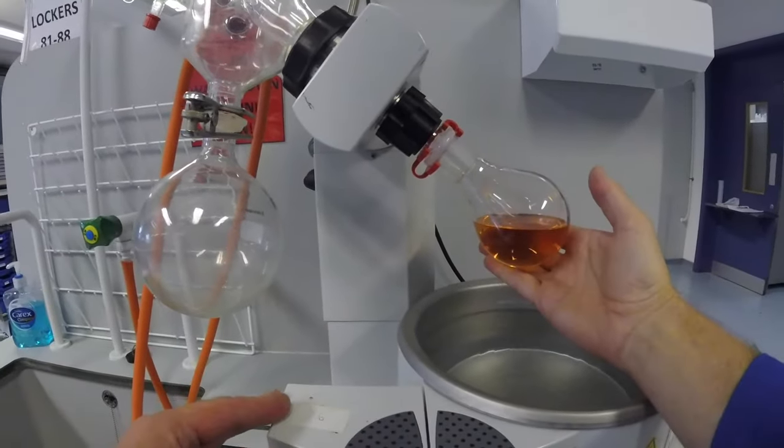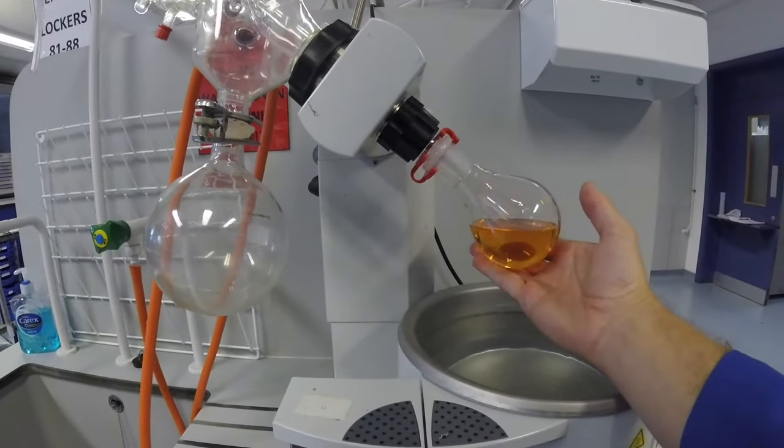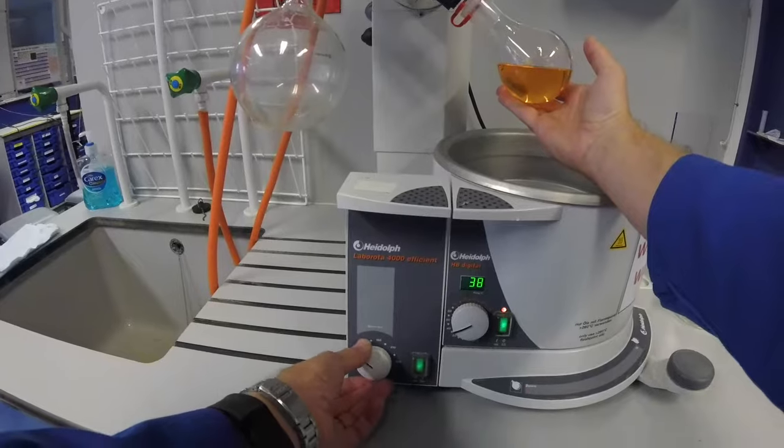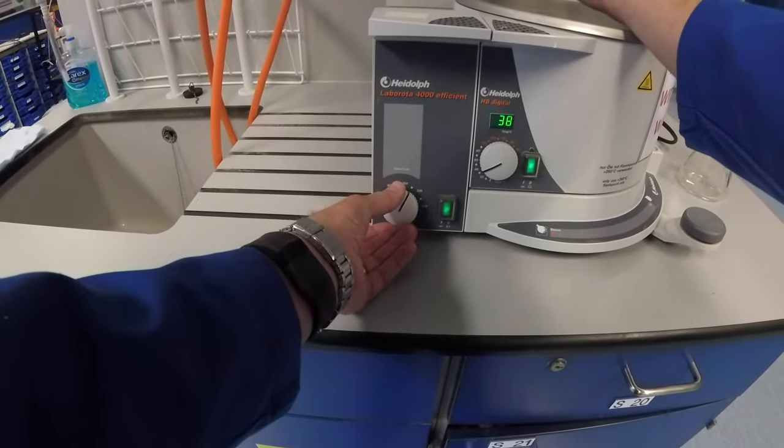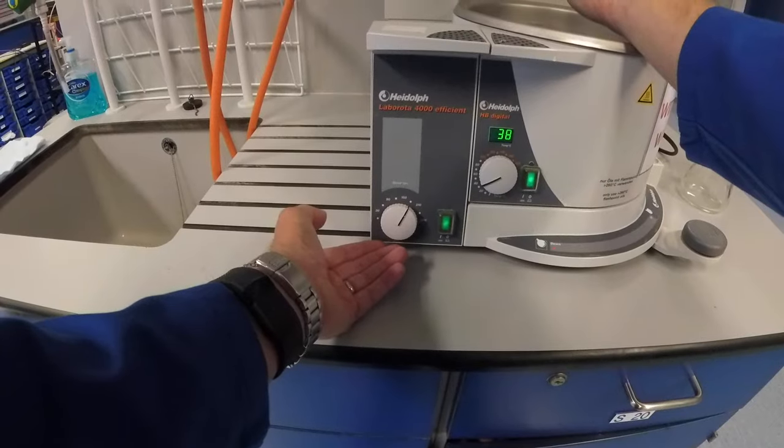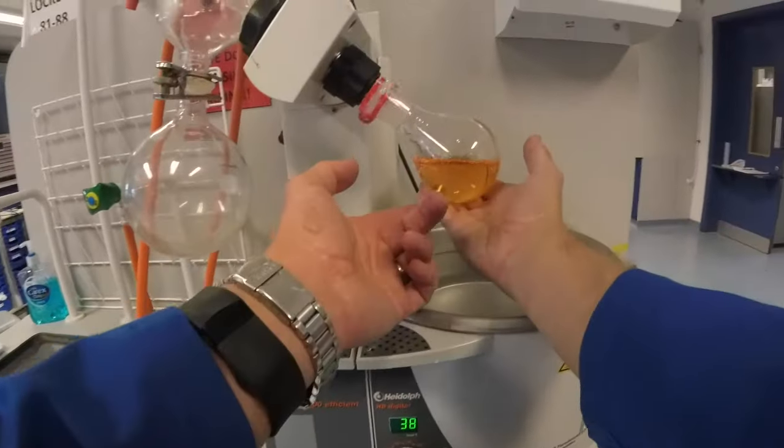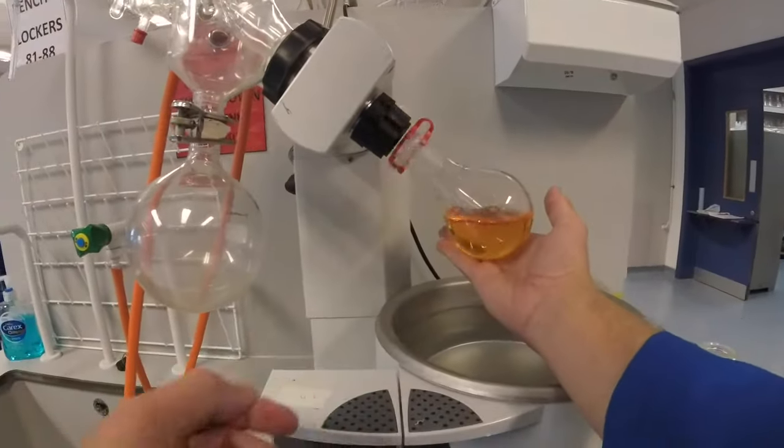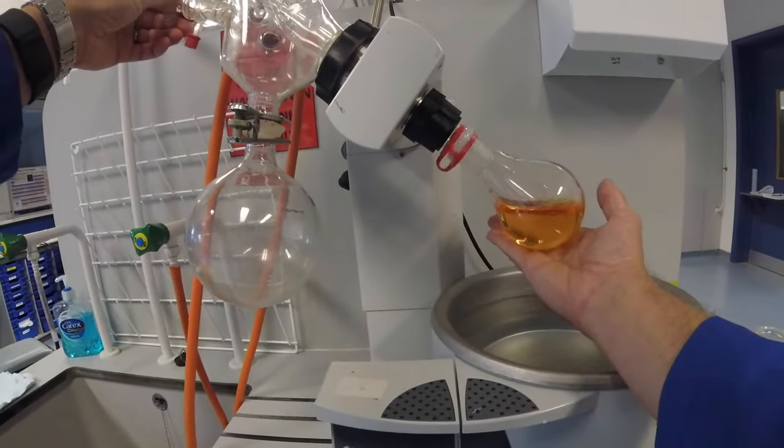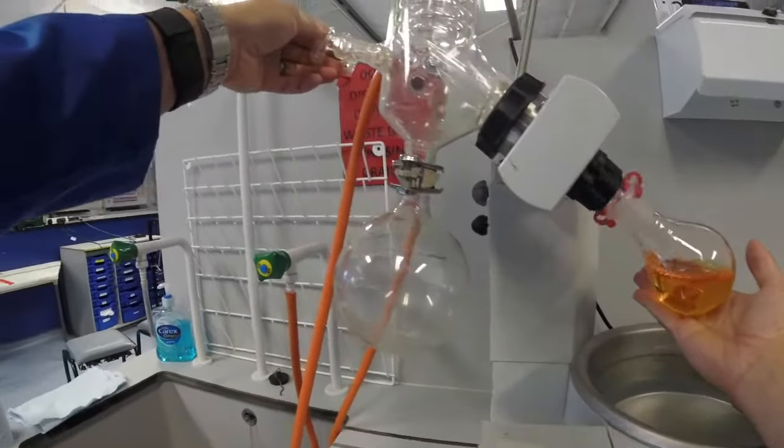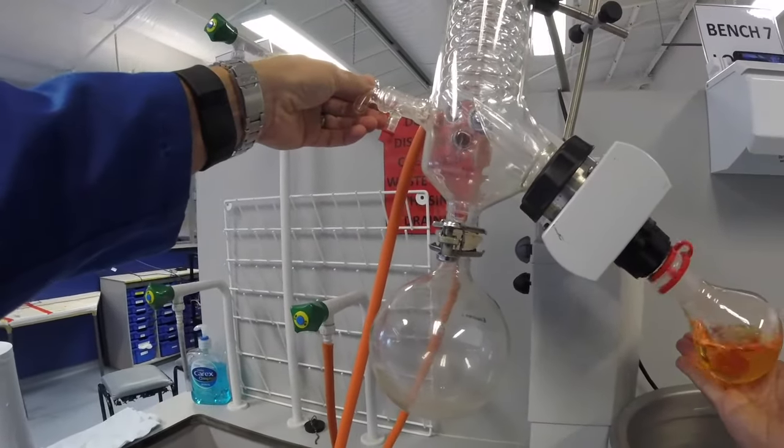And now we're going to start to rotate the flask and we're going to turn it until it's about two thirds, one o'clock position, keeping our hand underneath here just to make sure it can rotate gently against that and it's not going to fall in. And then we start to close the tap.